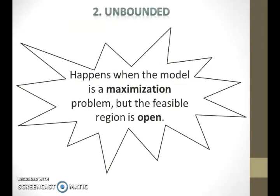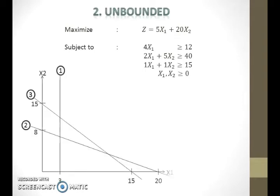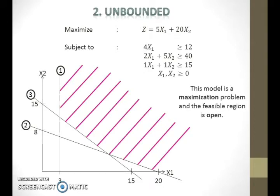Unbounded happens when the model is a maximisation problem but the feasible region is open. Suppose we want to solve this linear programming model using the graphical method. We first draw the graph and then identify the feasible region. Note that this model is a maximisation problem and the feasible region is open. Therefore, the model is unbounded.